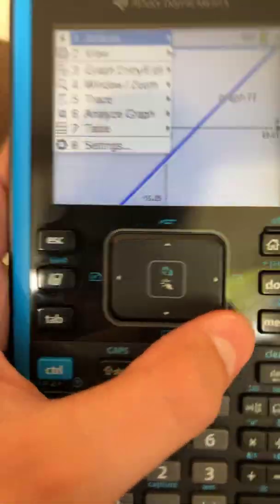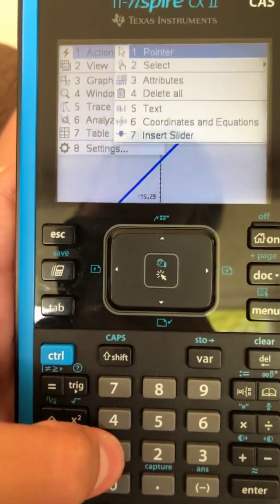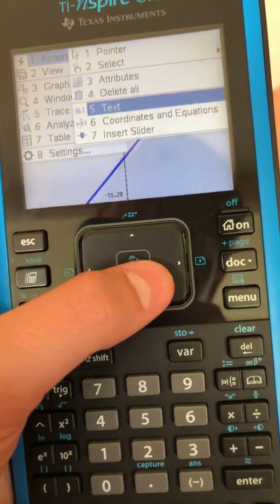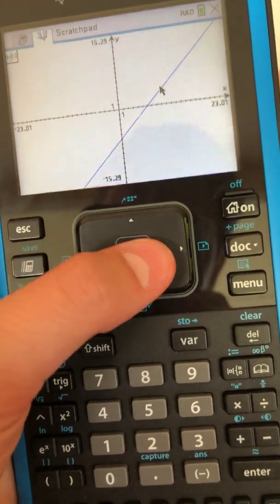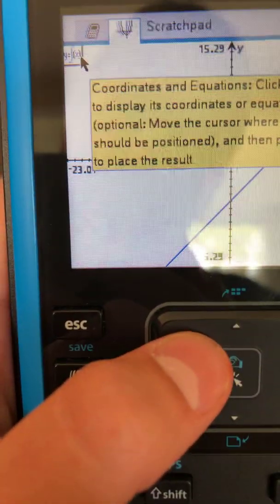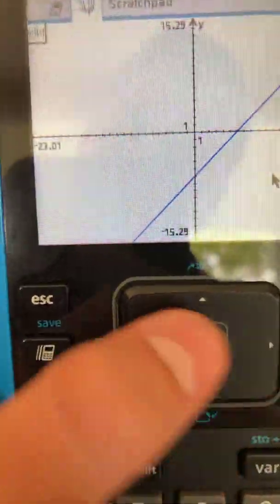So again, that's just menu 1, and you're going to click on this if you want to. Click an object to display its coordinates or equations. So that's just if you want to do that.